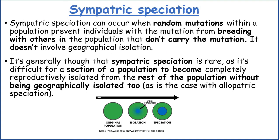Sympatric speciation can occur when random mutations within a population prevent individuals with the mutation from breeding with others in the population that don't carry the mutation. It doesn't involve geographical isolation. It's generally thought that sympatric speciation is quite rare, as it's difficult for a section of a population to become completely reproductively isolated from the rest of the population without being geographically isolated too.